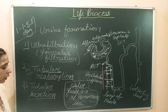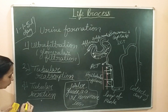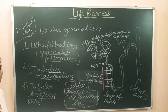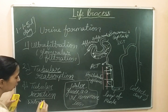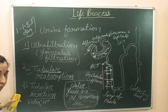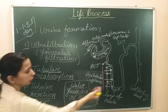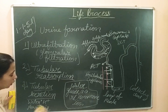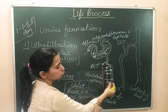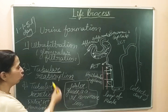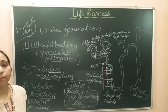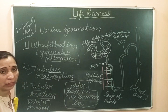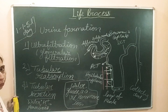What is secreted in this process? Water is also secreted back if too much has been absorbed. Hydrogen ions, potassium ions, and ammonia are also secreted back. Drugs are also secreted back. All these substances are secreted from the blood capillaries back into the renal tubules. This tubular secretion maintains the proper pH of the urine and also maintains the proper pH of the blood.